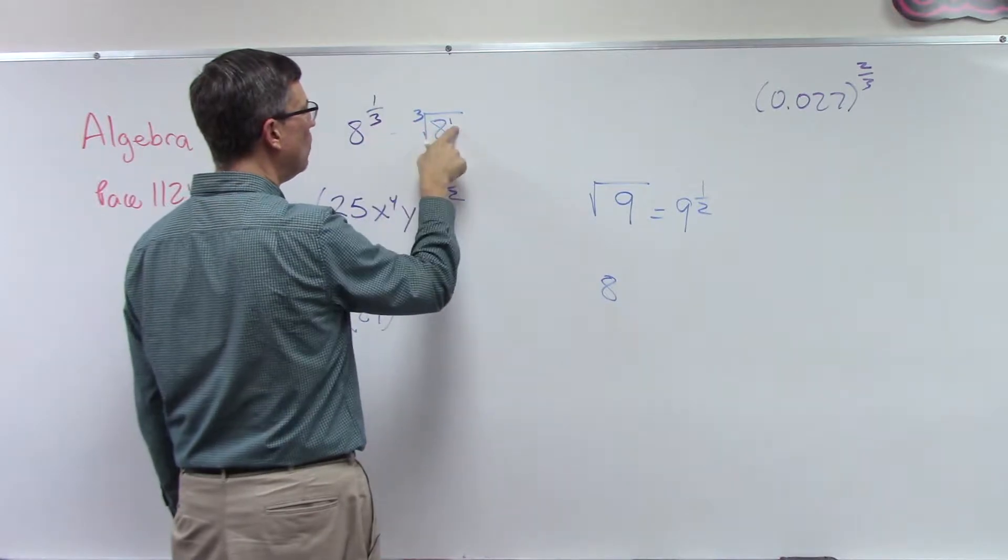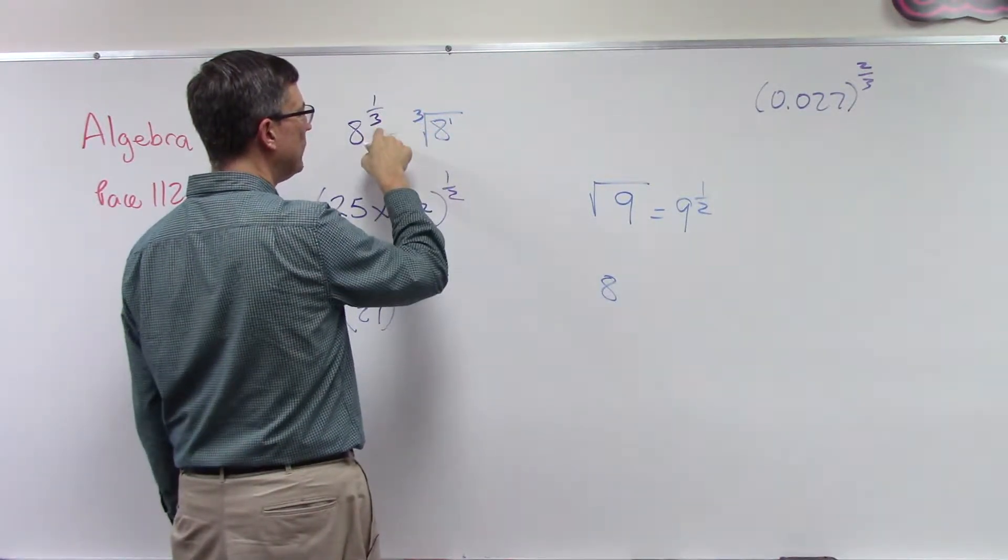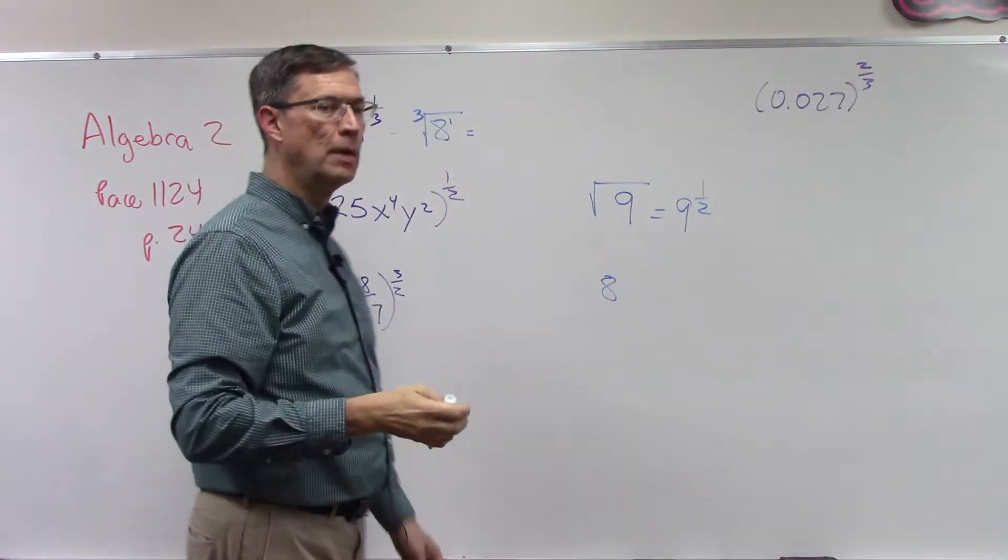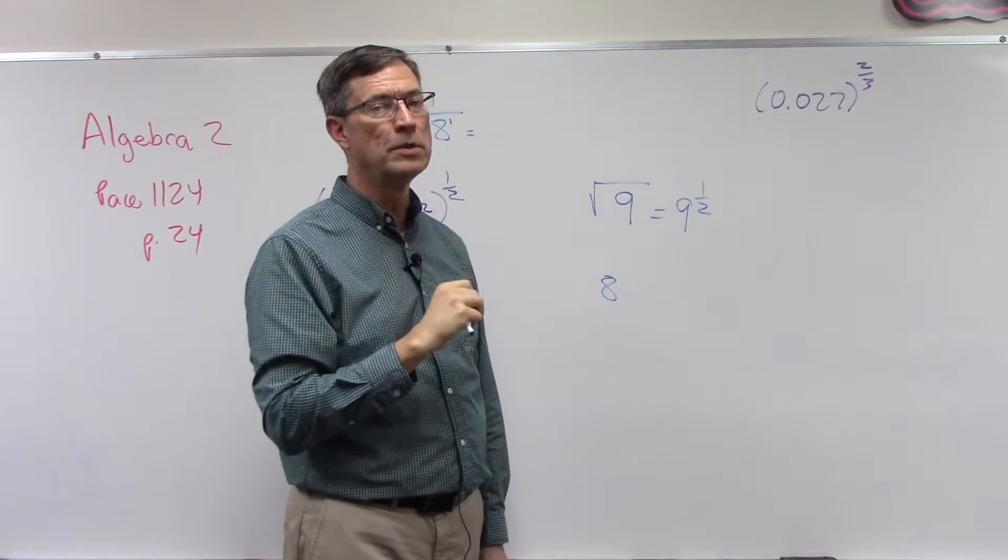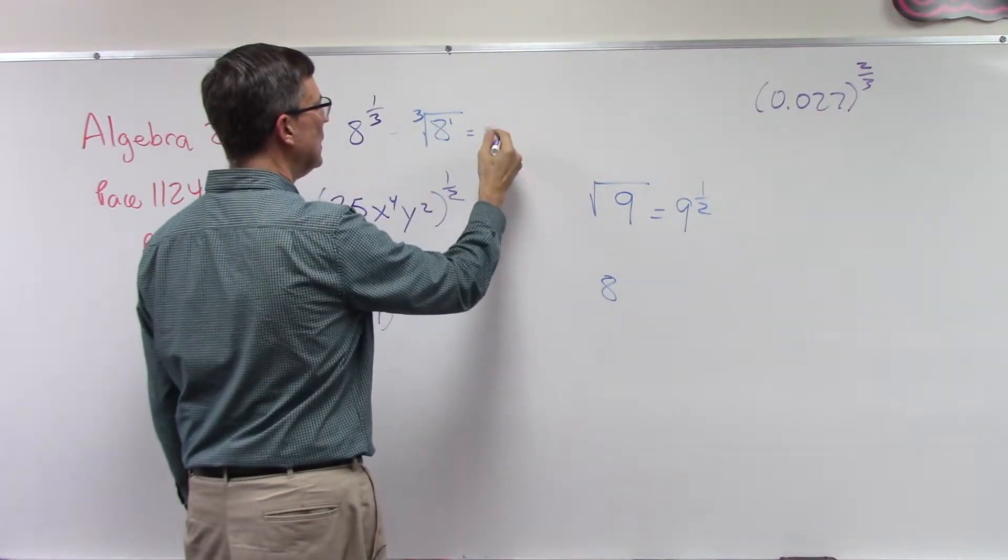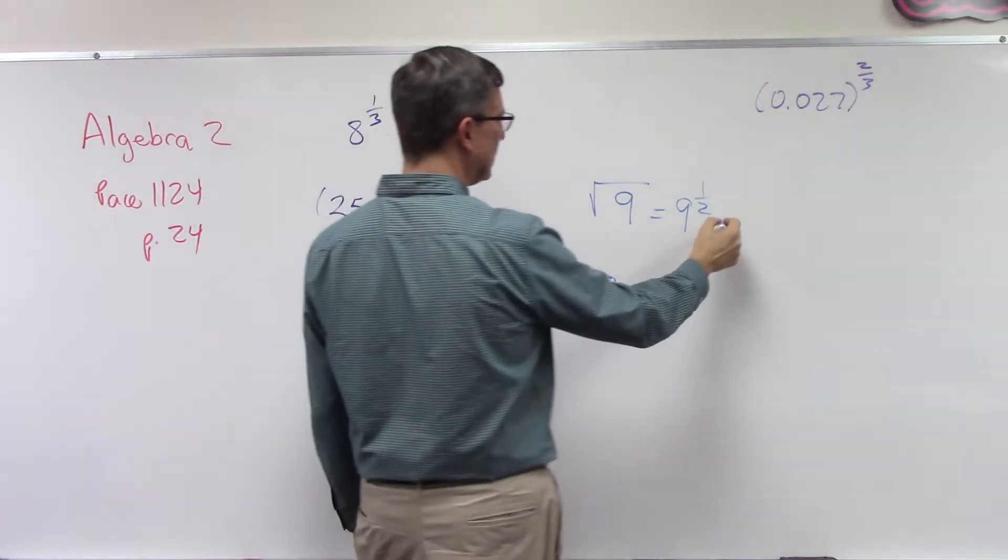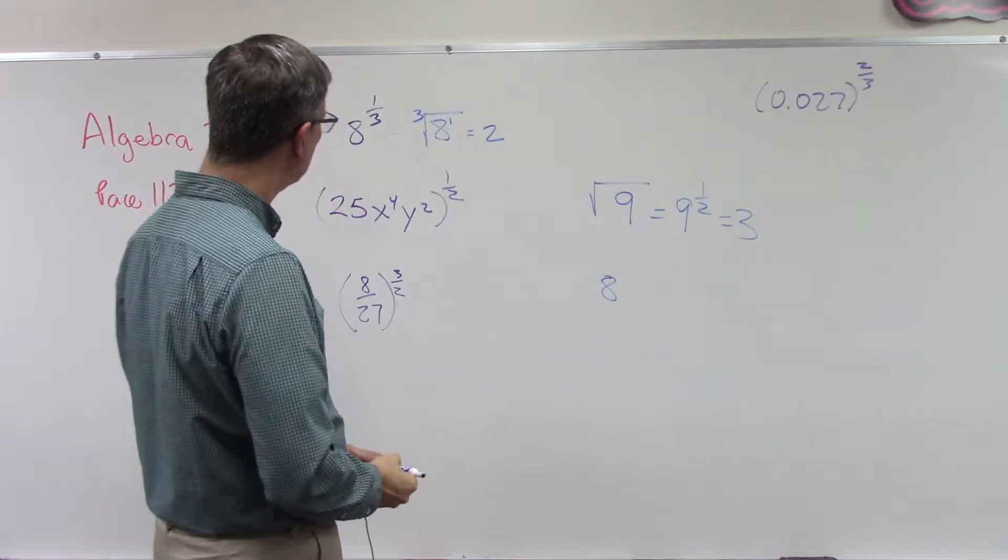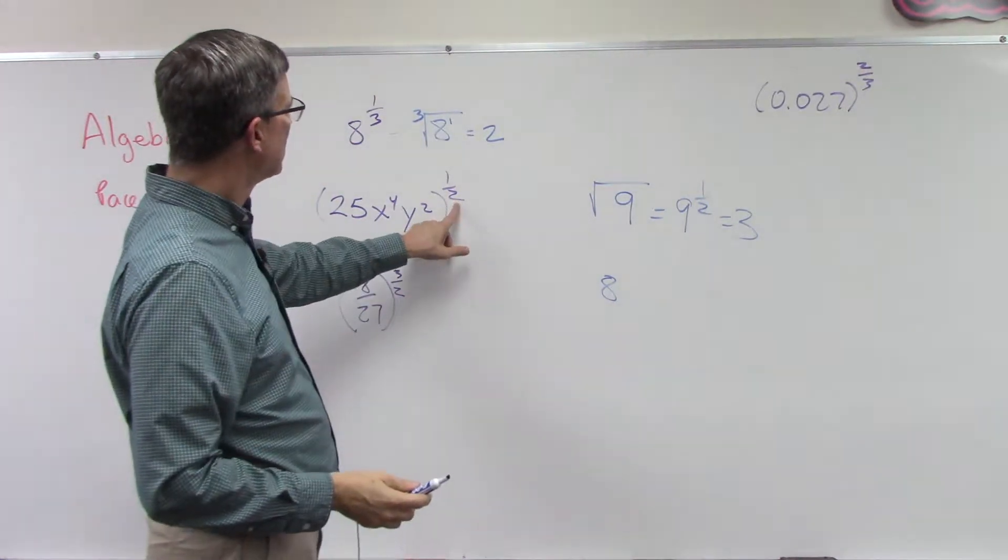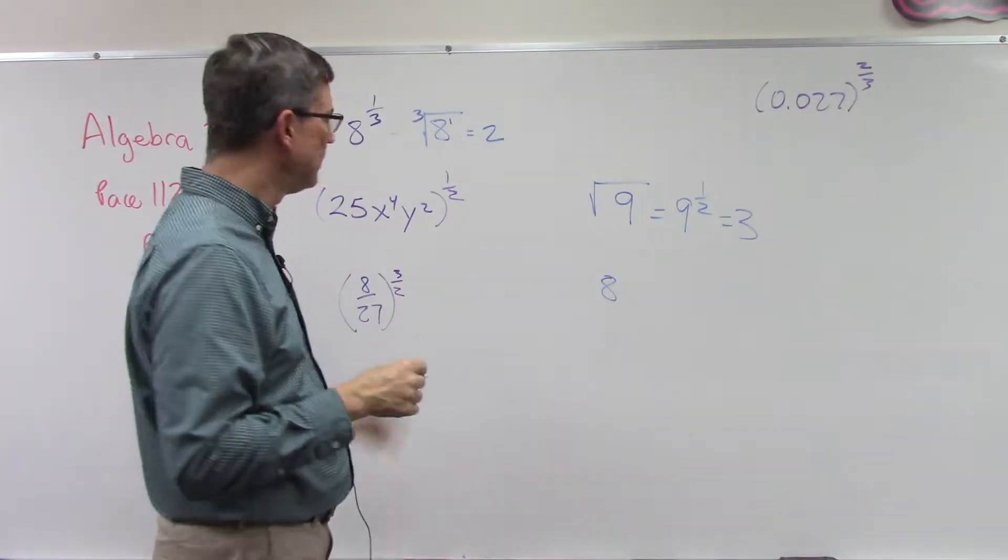That means what number times itself times itself three times equals 8? So that's easy, that would give us 2. Just like this would give us the answer of 3. Now if we have an exponent outside of parentheses, it's kind of like being distributed to everything inside the parentheses.